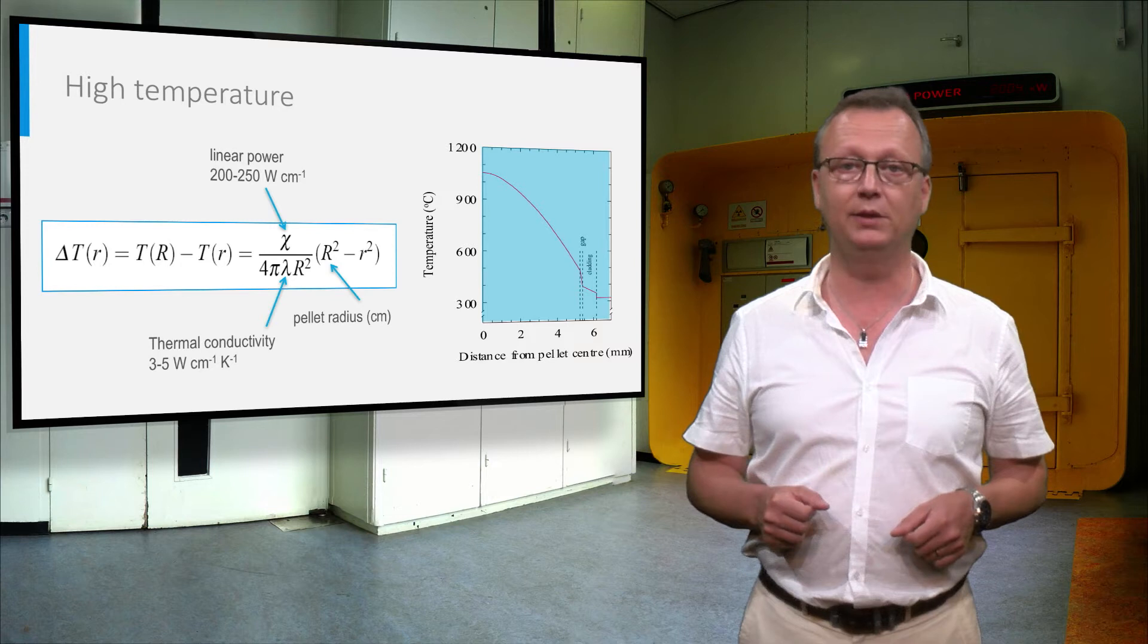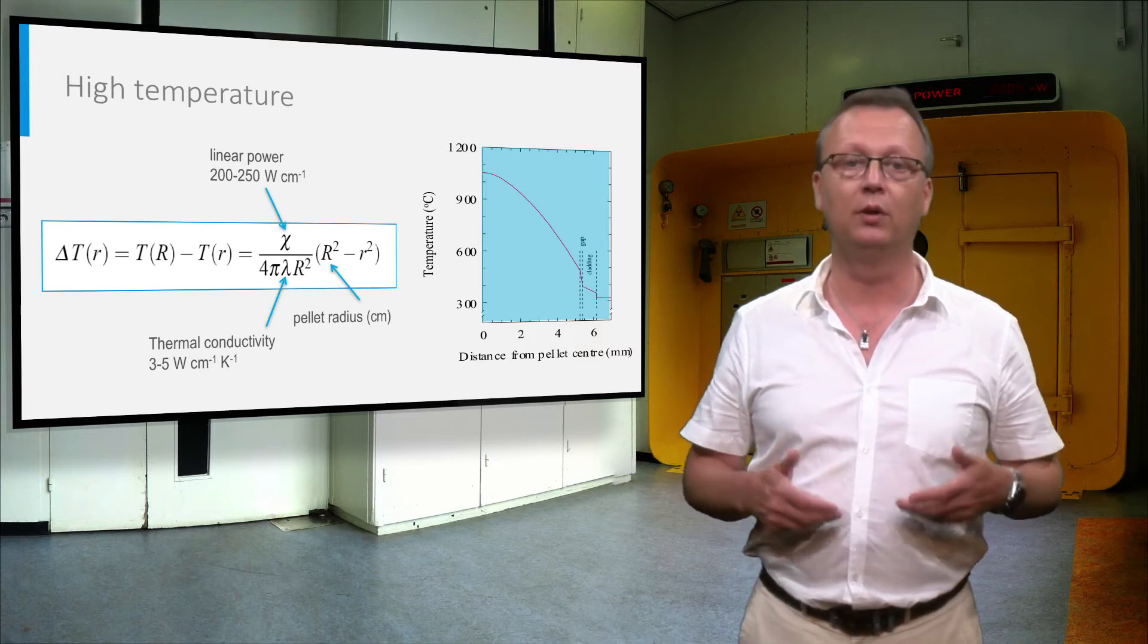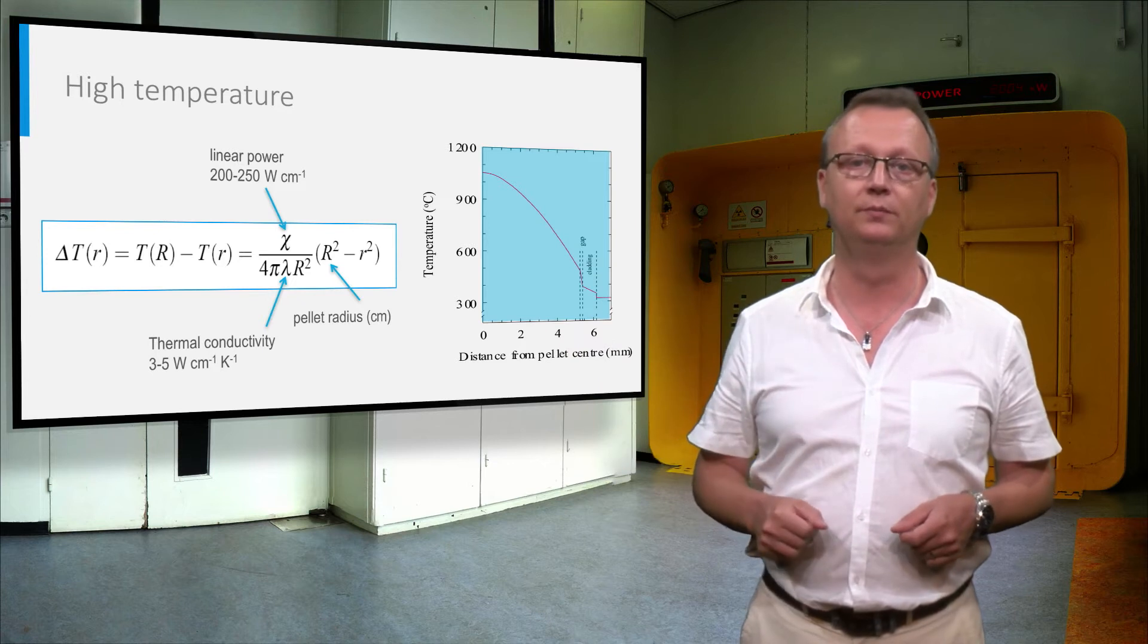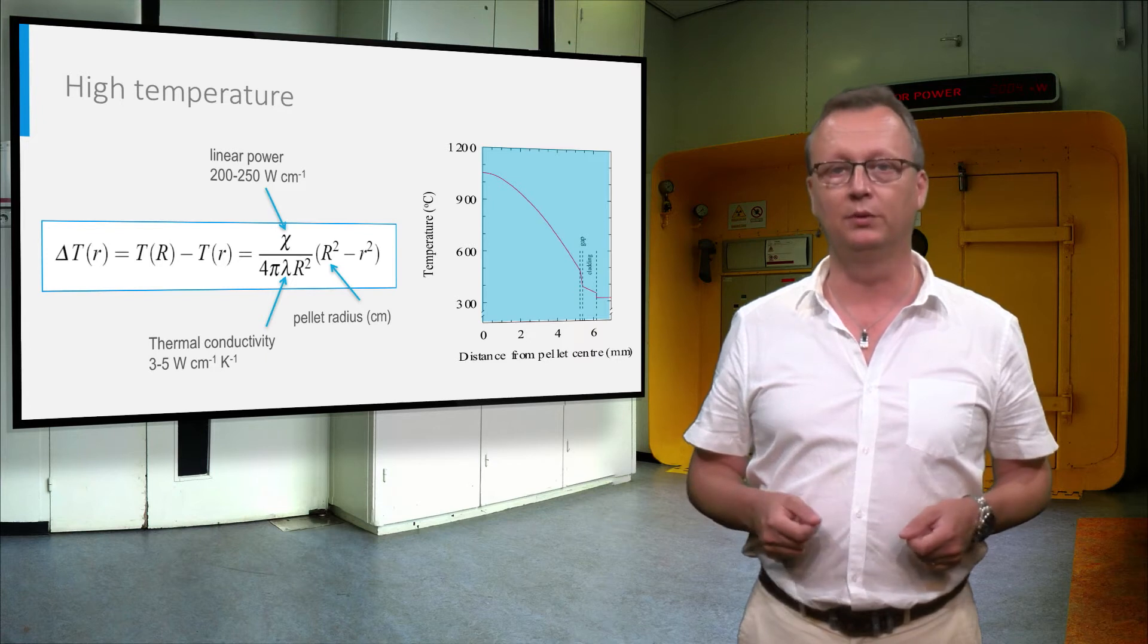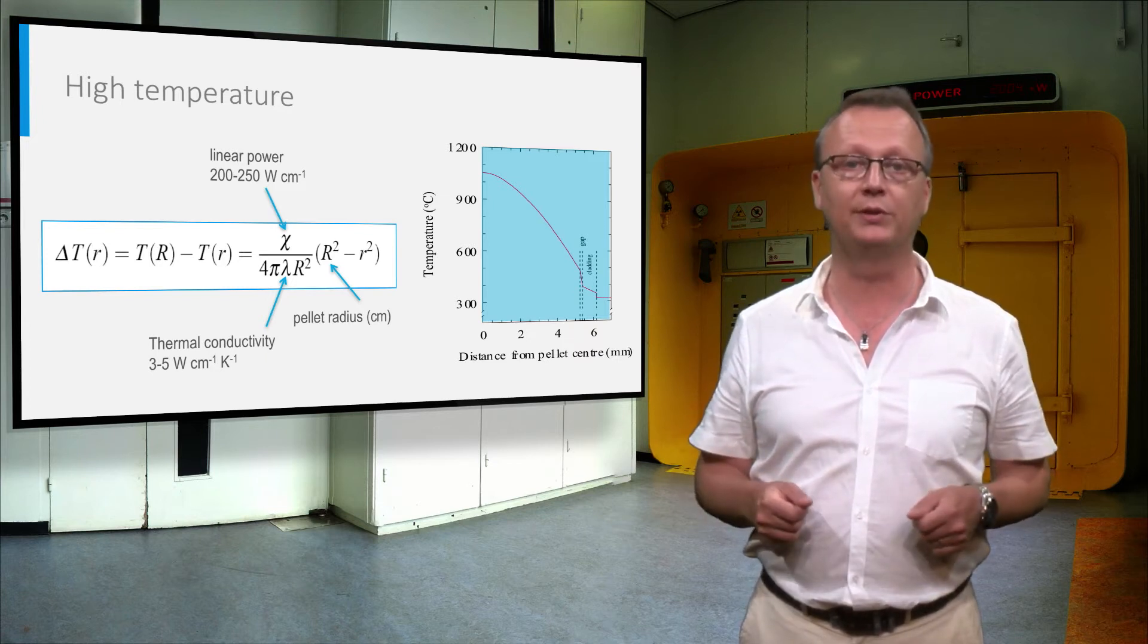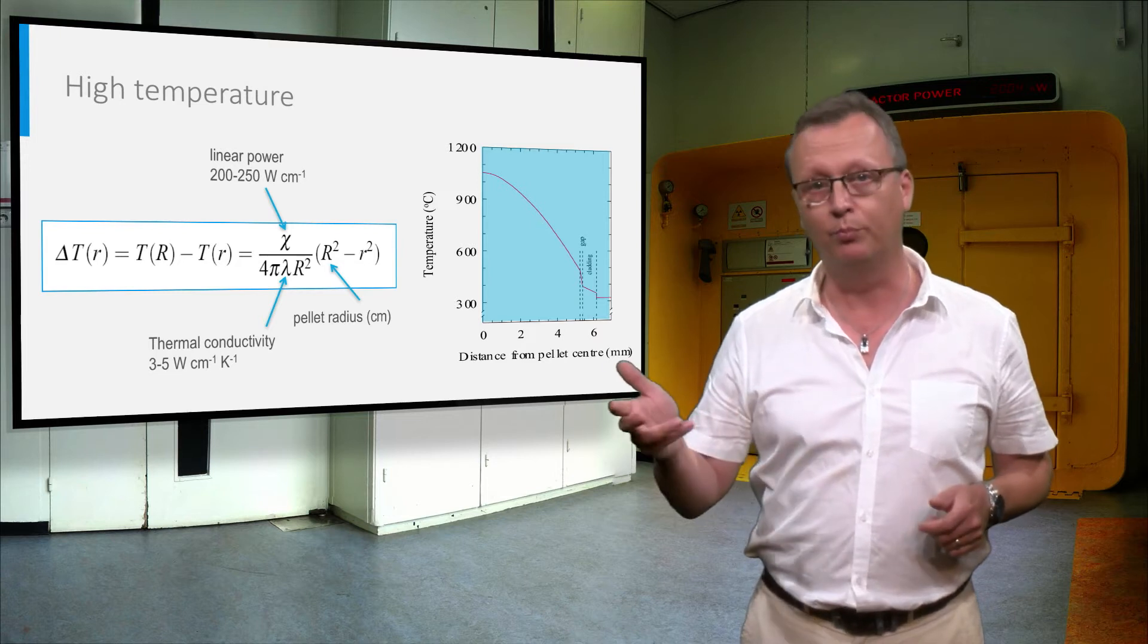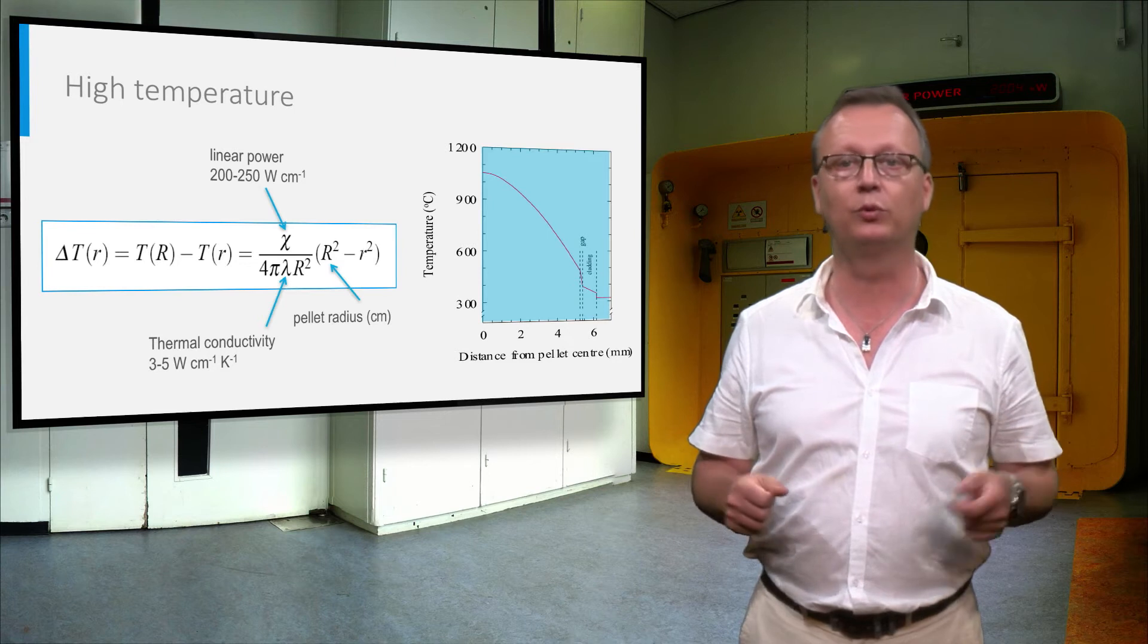The temperature in the pellet depends on two parameters: the amount of heat produced, the linear heat rate, and thermal conductivity of the fuel materials, as this simplified formula shows. As a result of the relatively poor thermal conductivity of UO2, the temperature gradient is steep, about 800 degrees Celsius between the center and the rim of the pellet. Since the gap between the pellet and the cladding is filled with helium, which also poorly conducts the heat, there is an additional temperature step close to the cladding.